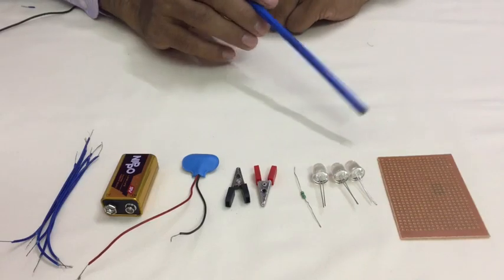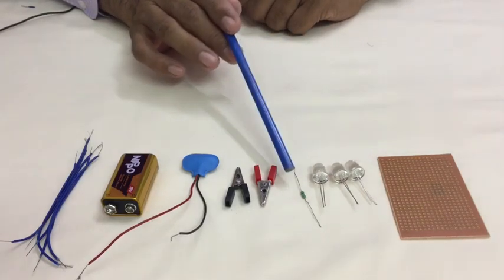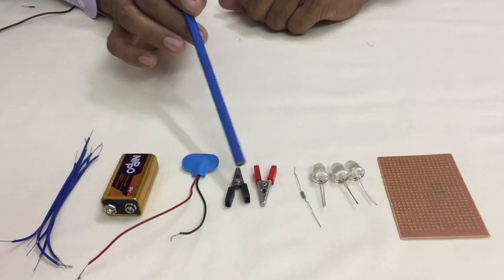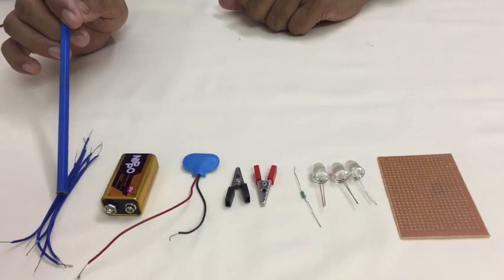To connect bulbs in parallel, we need a PCB, 3 LEDs, 1 resistor, 2 crocodile clips, battery connector, battery and connecting wires.